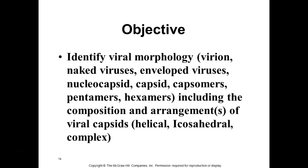Those individual subunits of proteins are commonly referred to as capsomeres. Sometimes they're arranged in particular patterns — pentamers (five) and hexamers (six). So six protein units together form a hexamer. The protein coats, those capsomeres, sometimes have quite complex arrangements.